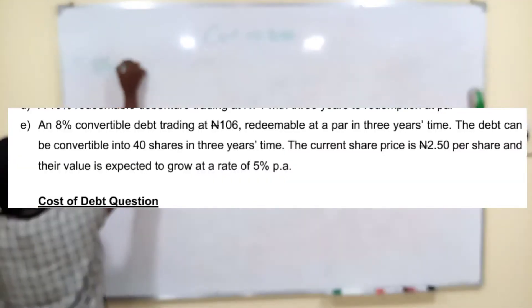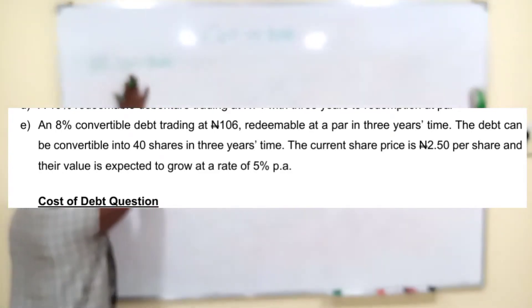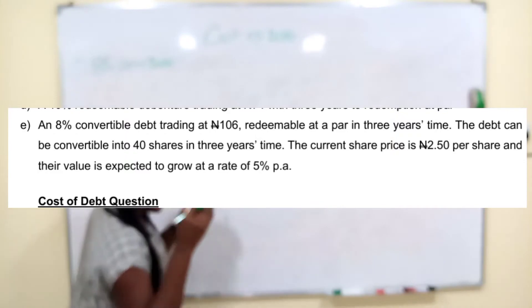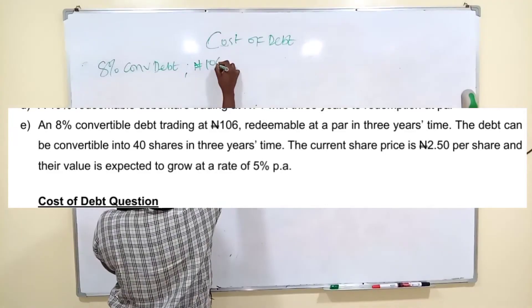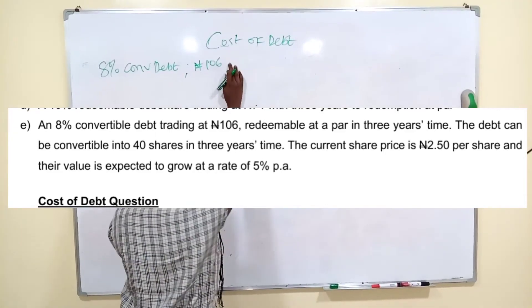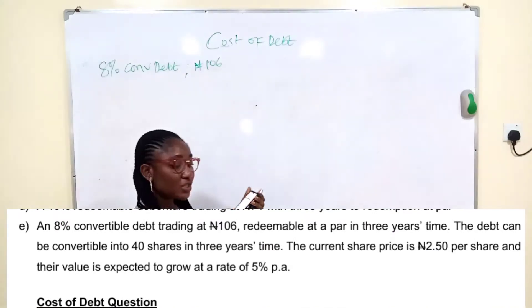This one says it's an 8% convertible debt. You should already know if something is convertible that it's a redeemable debt. So you should already know that you are able to accumulate. It has market value, trading at how much? 106 Naira. This one is trading at a premium. That is an investor, which is a debt holder,